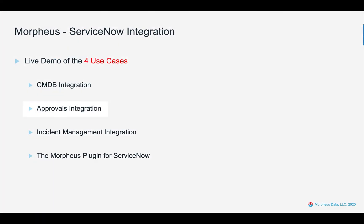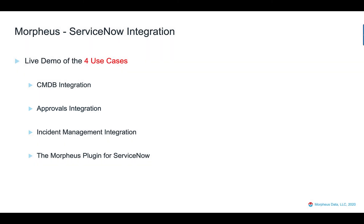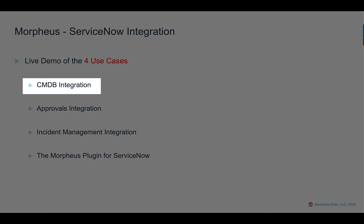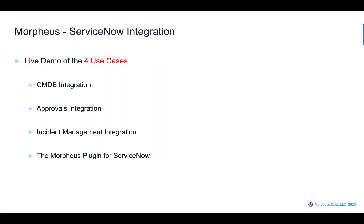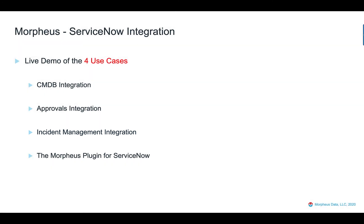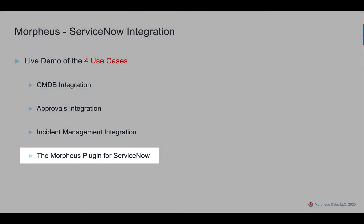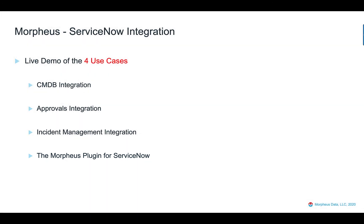To summarize: we showed the approval integration by requesting services and applications in Morpheus and/or ServiceNow and approving them in ServiceNow. We also showed the CMDB integration by highlighting the CI records that are created and modified in ServiceNow. We showed the incident management integration by demonstrating how incidents get opened and then resolved in ServiceNow. And lastly, we showed the Morpheus plugin for ServiceNow, which allows us to share Morpheus instances and applications right into the ServiceNow service catalog for ServiceNow users to provision directly from there.